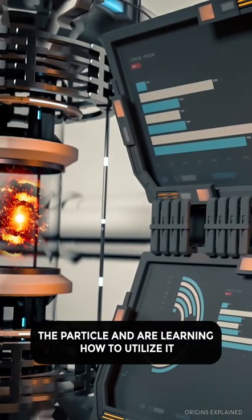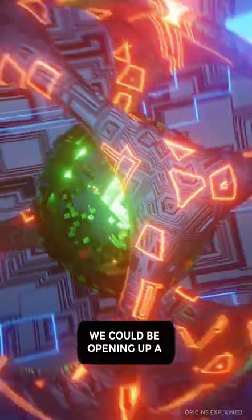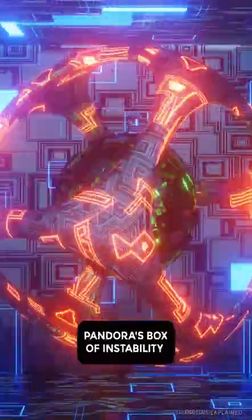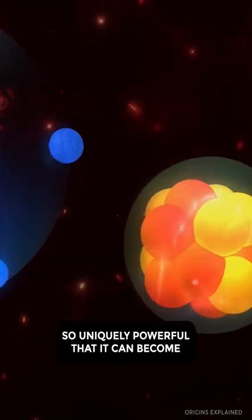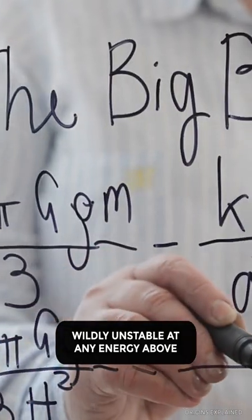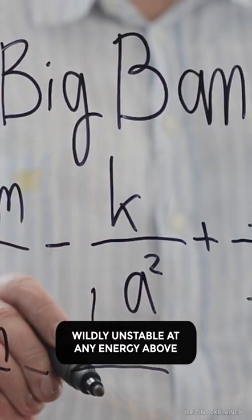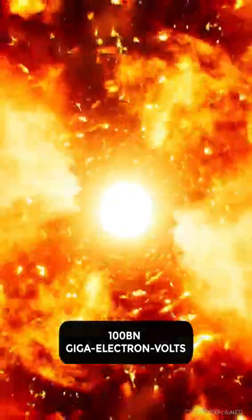Now that we have discovered the particle and are learning how to utilize it, we could be opening up a Pandora's box of instability. The particle is just so uniquely powerful that it can become wildly unstable at any energy above 100 billion giga electron volts.